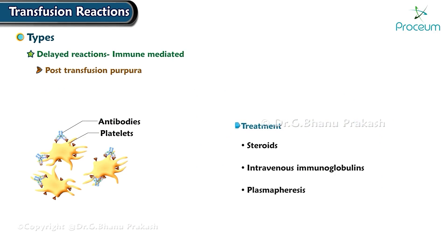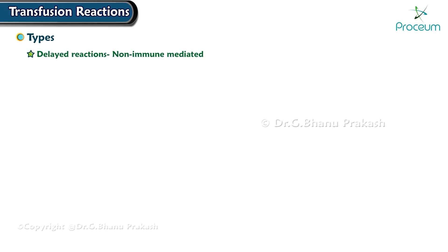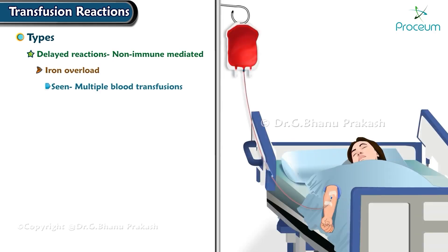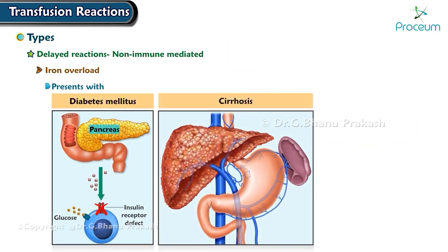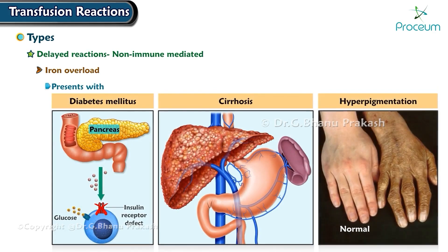Delayed non-immune mediated reactions: iron overload is usually seen in persons who receive multiple blood transfusions. It can cause secondary hemochromatosis. Patients present with diabetes mellitus, cirrhosis, and hyperpigmentation. Iron chelating agents like deferoxamine can be used in treatment.